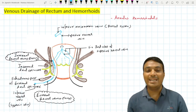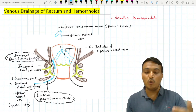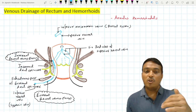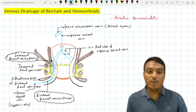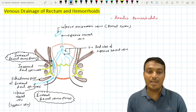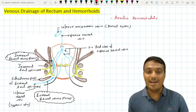The six radicals of the superior rectal vein drain the upper part of the anal canal — the area above the pectinate line — into the portal system. The part of the anal canal below the pectinate line drains into the inferior rectal vein through the external rectal venous plexus and into the systemic circulation.